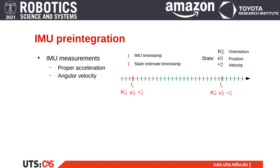As the acceleration information provided by an IMU is affected by the Earth's gravity, standard integration depends on the initial orientation at time t1. This implies the recomputation of the integrals at every step of the optimization process.